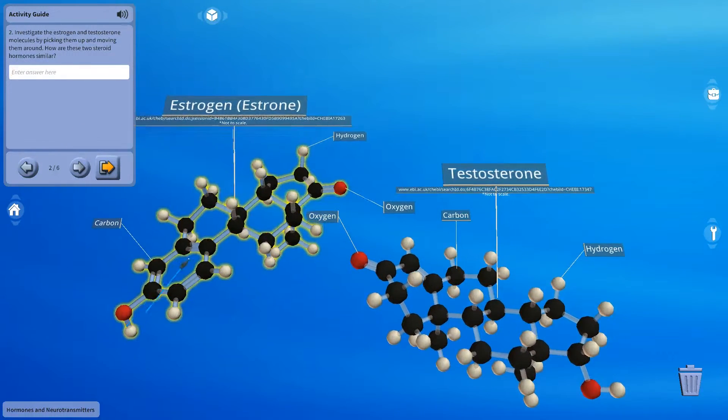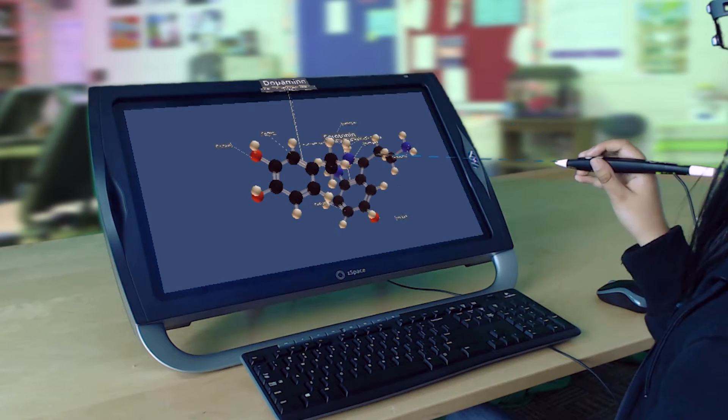Those are lipids. And the other two of which are neurotransmitters. And those are derivatives of amino acids.